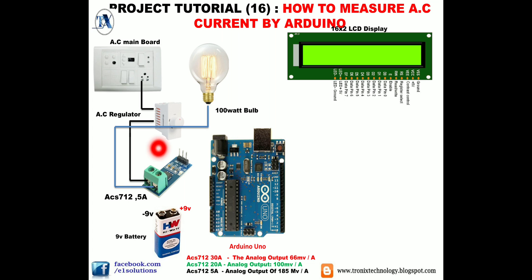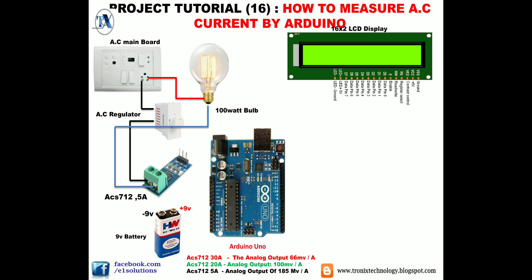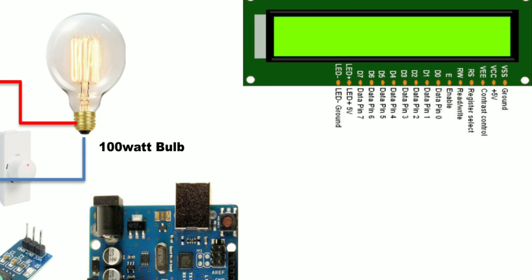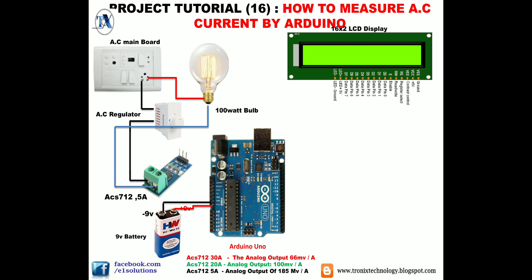Connect the other pin of the ACS712 module with the 100-watt bulb, and the other wire with AC mains. This completes the circuit — we are connecting the AC regulator in series with the 100-watt bulb and also connecting the ACS712 module in series with this setup. Connect the positive 9-volt battery to the Arduino Uno, and connect the negative of the Arduino Uno with the negative of the battery.